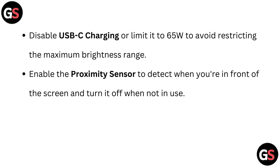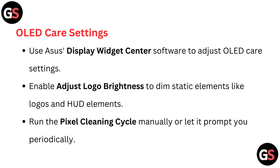Disable USB-C charging or limit it to 65W to avoid restricting the maximum brightness range. Enable the proximity sensor to detect when you are in front of the screen and turn it off when not in use.